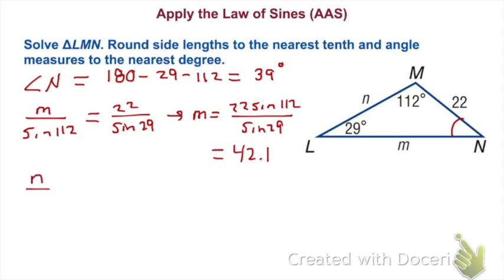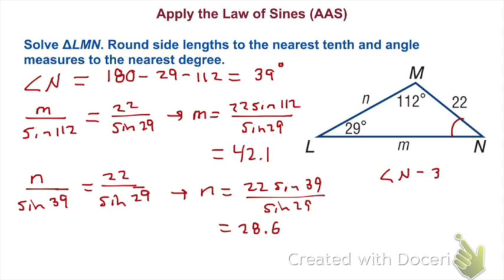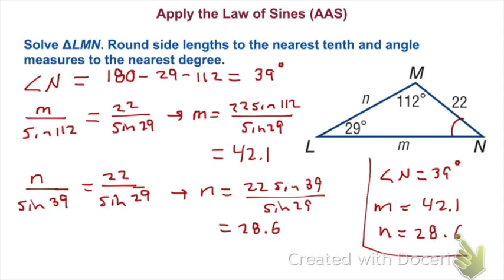Now we're going to find side N. We have N over the sine of angle N, which is 39 degrees. It equals 22 over sine of 29. When you use your calculator, you should get 28.6. When you are done, make sure you have a clear presentation of your answers: angle N is 39 degrees, M is 42.1, and N is 28.6. Those are the missing pieces, and we have solved the triangle.